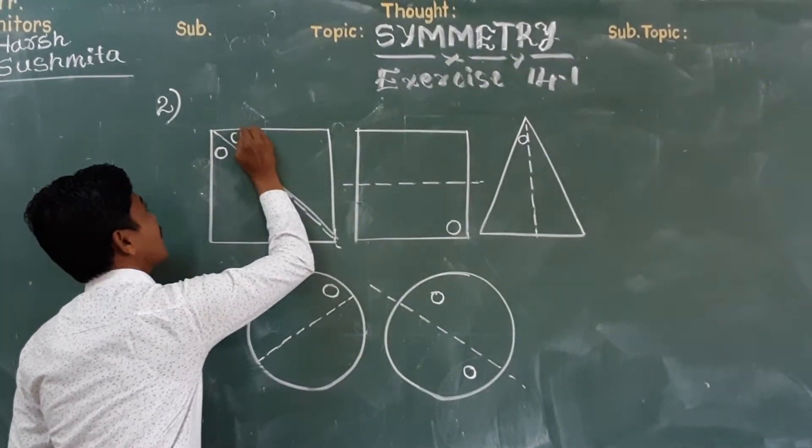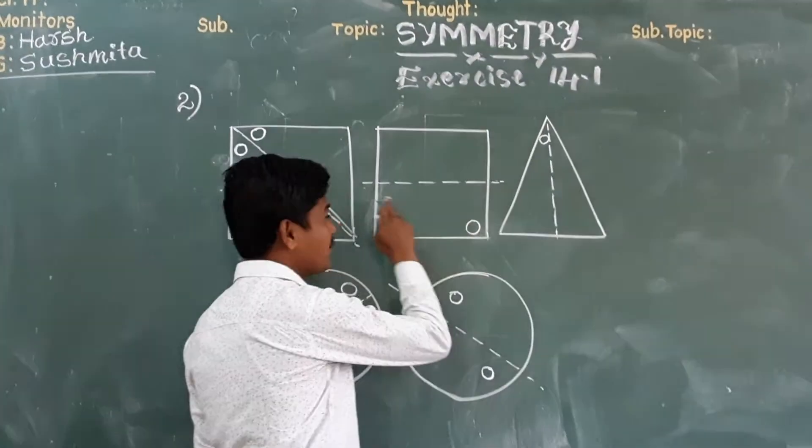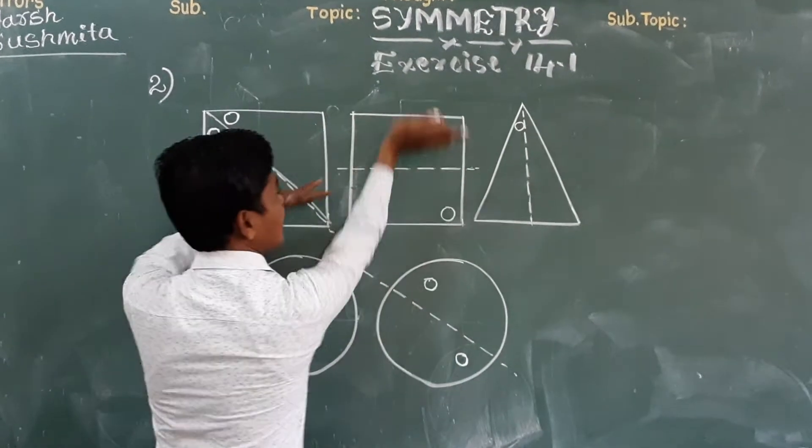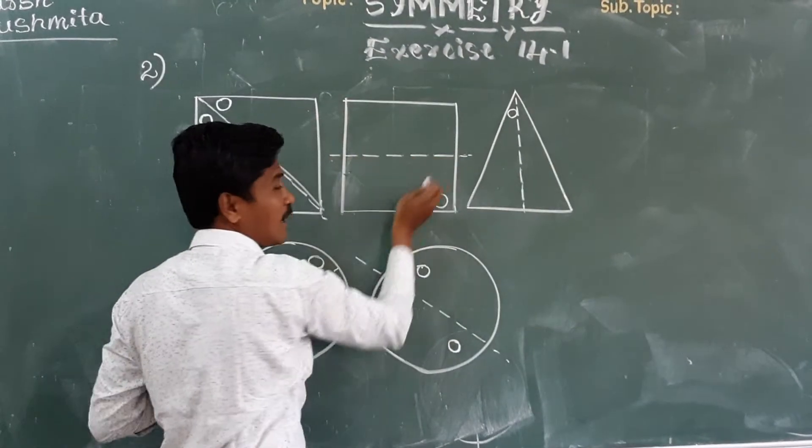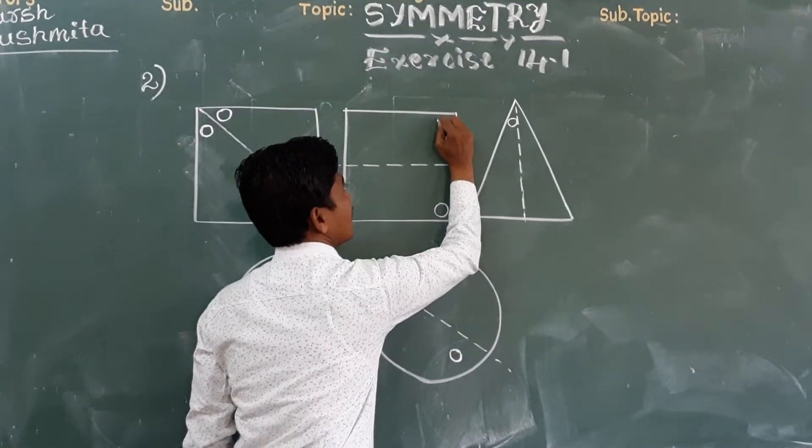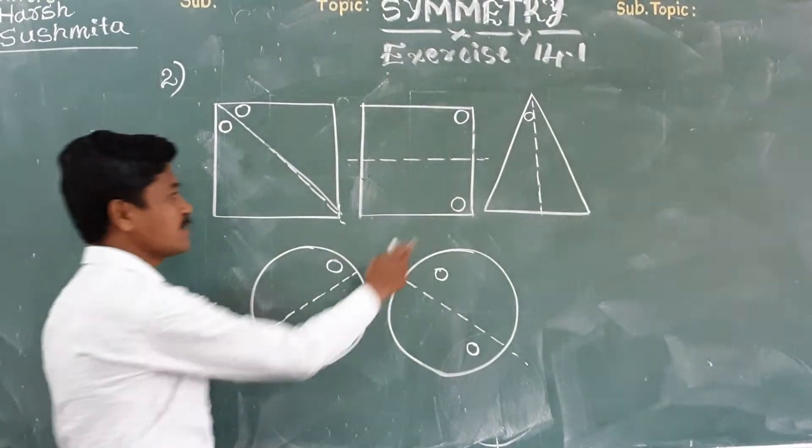Now, if this is the line of symmetry in the second figure, if I fold like this along with the axis of symmetry or the line of symmetry, will this circle come here? Yes sir. Right? Yes sir.